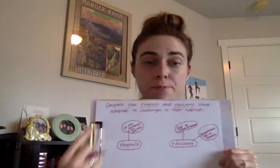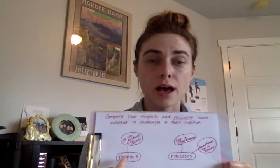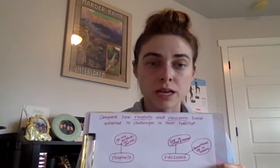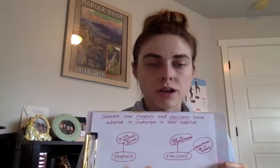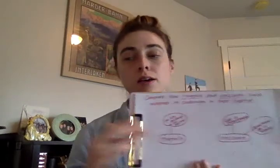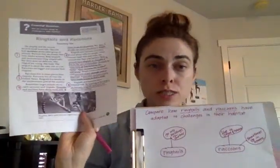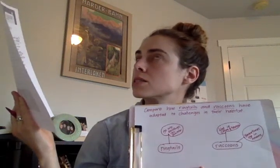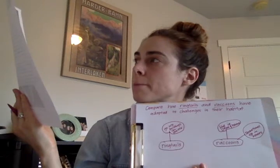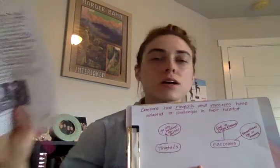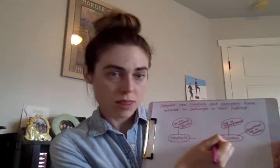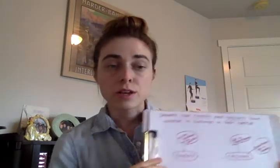Your job is to come up with one way that ringtails and raccoons have adapted to humans being in their habitat — a challenge that is the same. To do that, go back to the text and look for clue words like 'both' or 'also' — words that signal they are the same. I look forward to seeing what you come up with. Talk to you later. Bye.